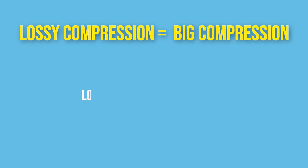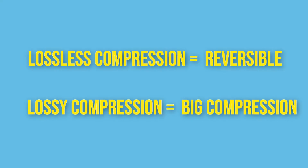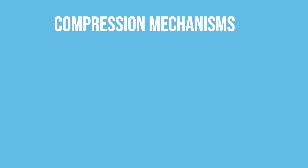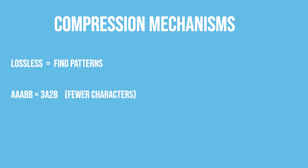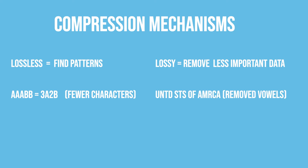You may wonder why you would ever use lossy compression. It's because with lossy compression, you can compress a lot. Lossless compression usually only gives you a little bit of compression. So on the exam, if you get a question asking what kind of compression to use, remember: lossless is reversible, lossy means you get big compression. The lossless mechanism is to find a pattern — if I have AAABB, I can rewrite that as 3A2B and save characters, which saves space. The lossy mechanism basically involves changing or removing less important data so that the fact the file is smaller and has less information is not noticeable — you can still tell what's going on.